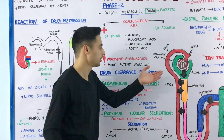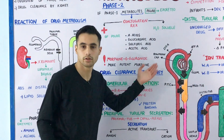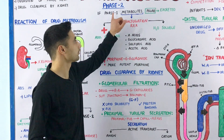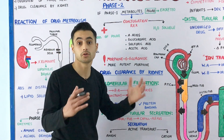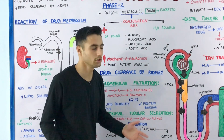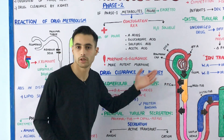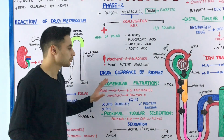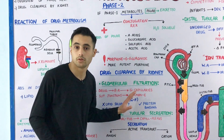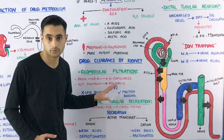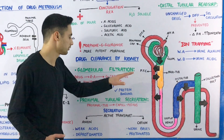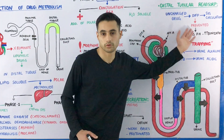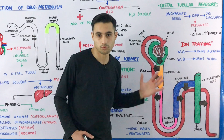Now, how is the drug cleared from the body by the kidneys? We have made the drug polar using phase 1 and phase 2 reactions — it is now water-soluble. The process of renal excretion is very similar to urine formation and consists of three steps: glomerular filtration, proximal tubular secretion, and distal tubular reabsorption.